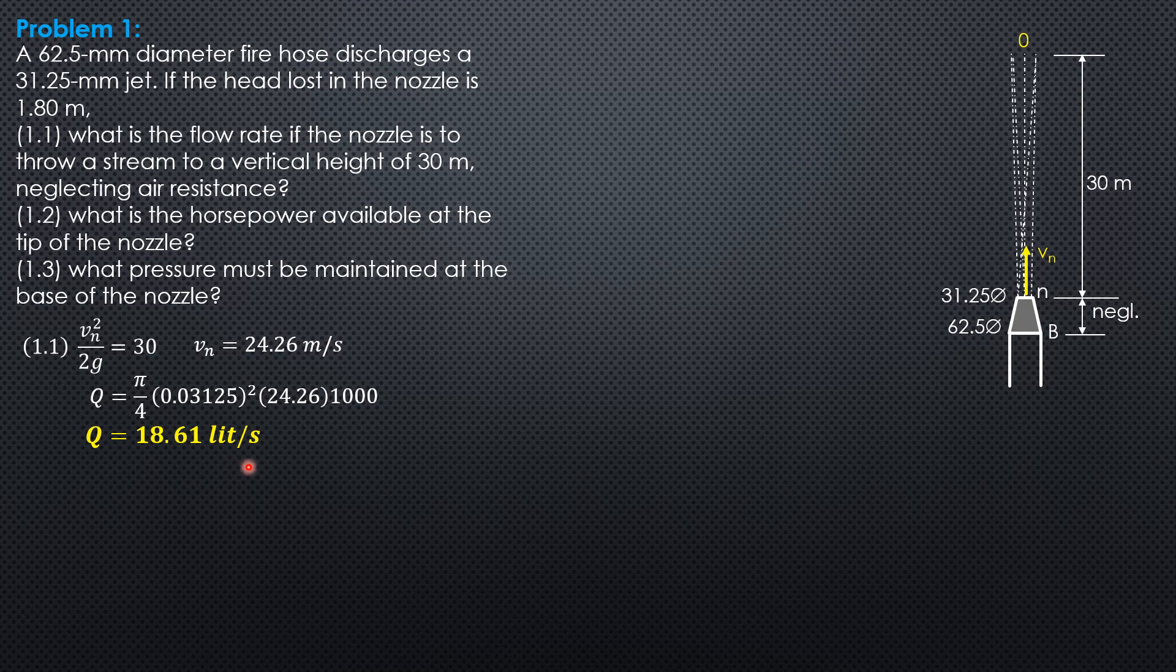What is the horsepower available at the tip of the nozzle? Since the tip is exposed to the atmosphere, the energy available at the tip of the nozzle is only the velocity head, which equals 30 meters.